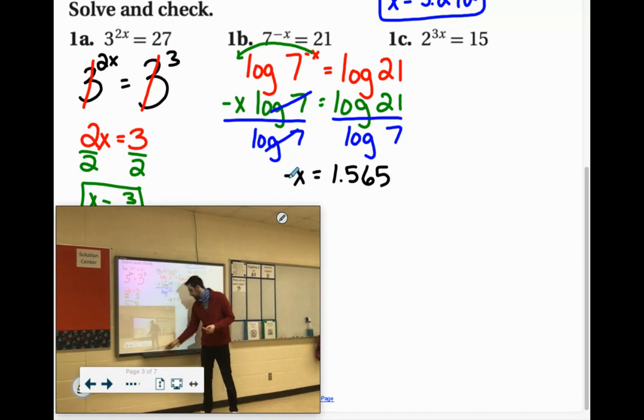Now that's negative x, so we have to make it positive x. So you just make it the opposite. x equals negative 1.565.